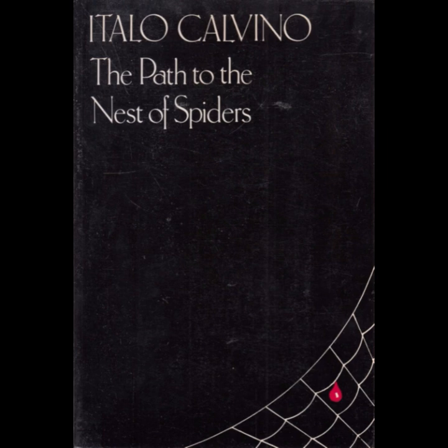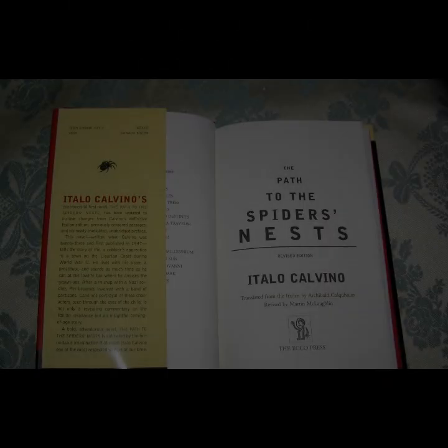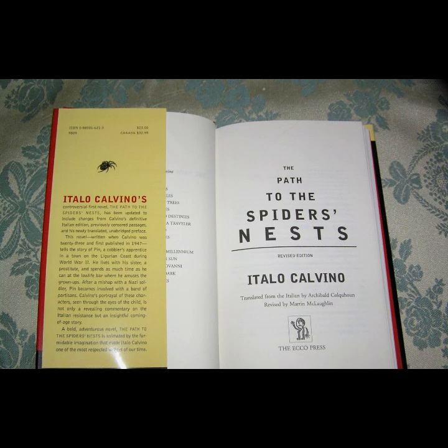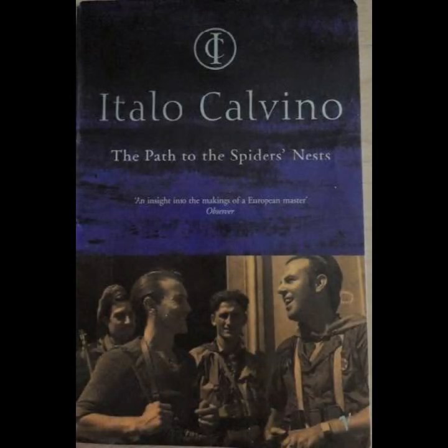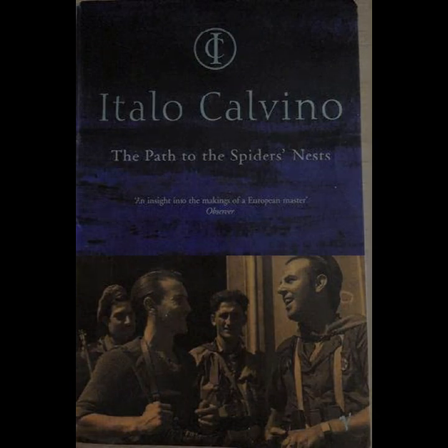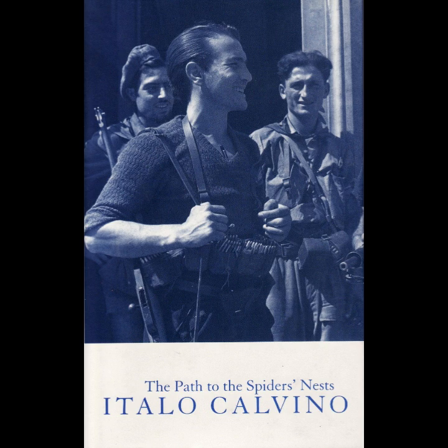Pin's character is a vehicle through which Calvino examines the loss of innocence and the impact of war on the human psyche. As Pin becomes more deeply involved in the resistance, his moral compass is tested, and he is forced to confront the harsh realities of human nature and survival. His journey is not just a physical one but also an emotional and psychological odyssey that reflects the broader themes of disillusionment and the search for identity in a world fraught with conflict.